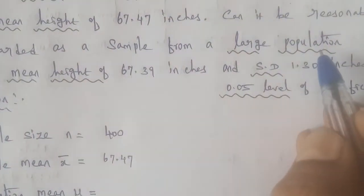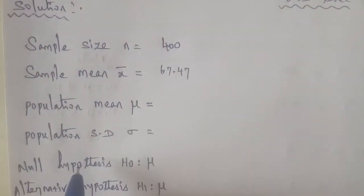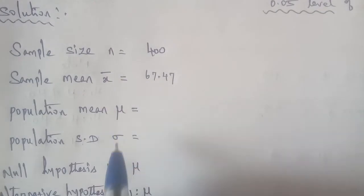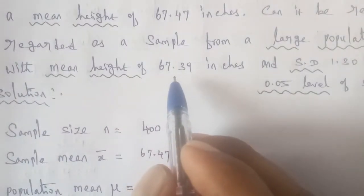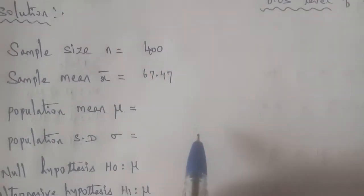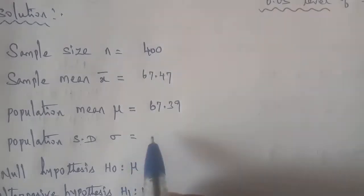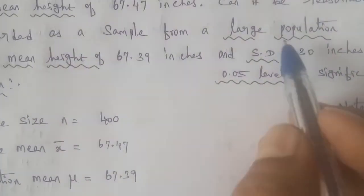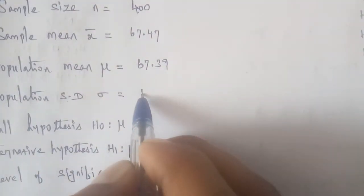The question mentions a large population, so the population mean and population standard deviation are given. The mean height is 67.39 inches, μ equals 67.39 inches, and the population standard deviation σ is 1.30.